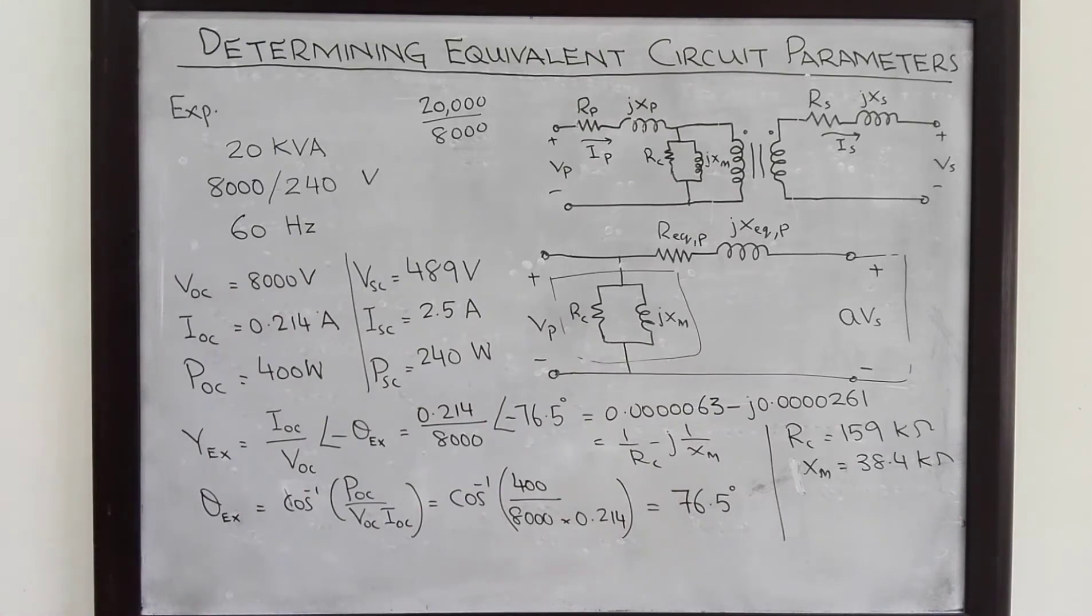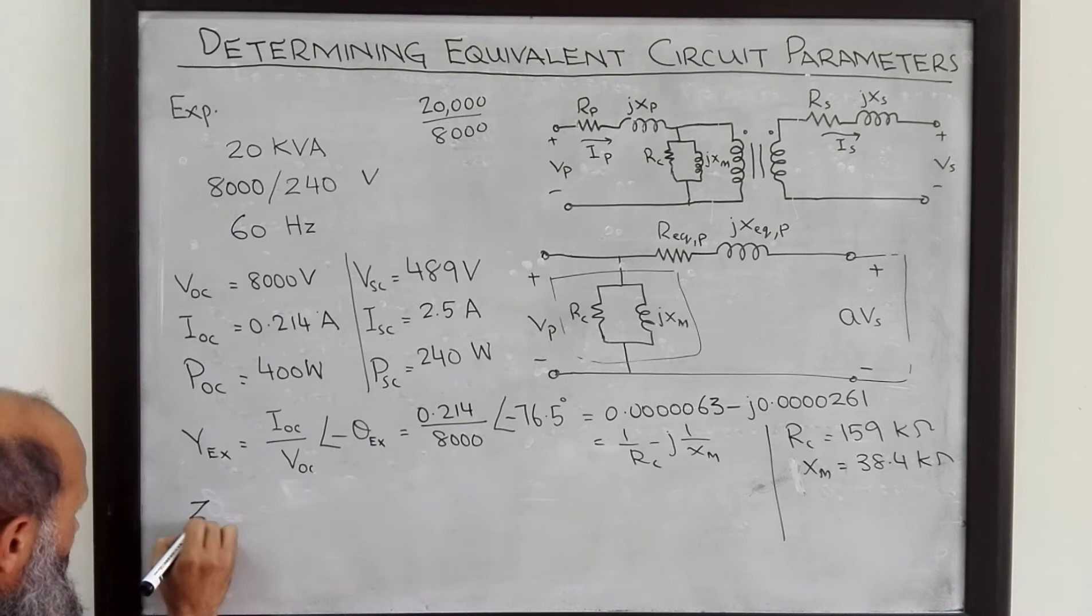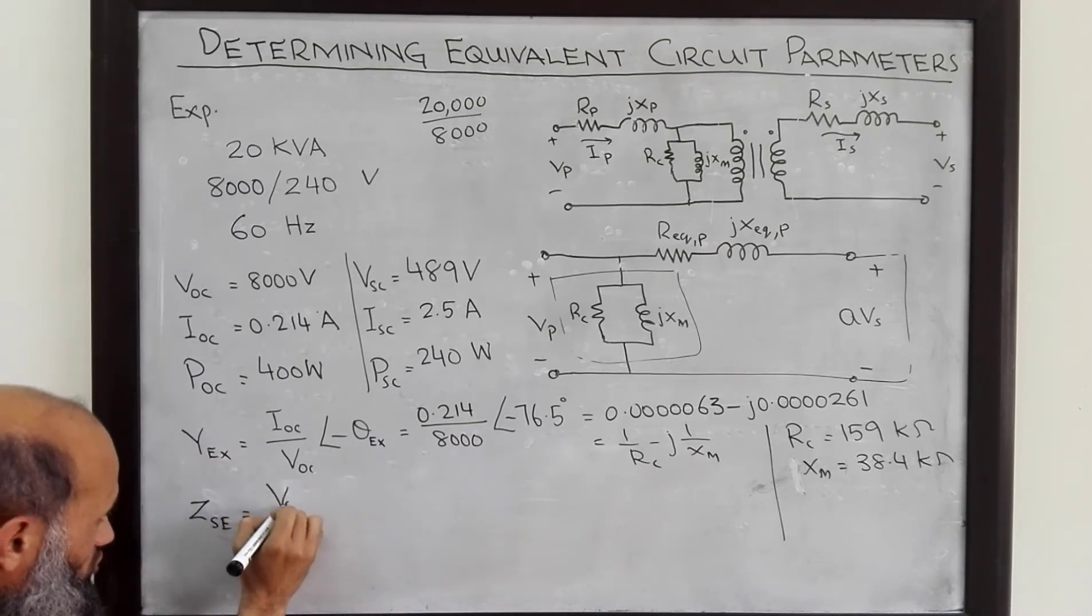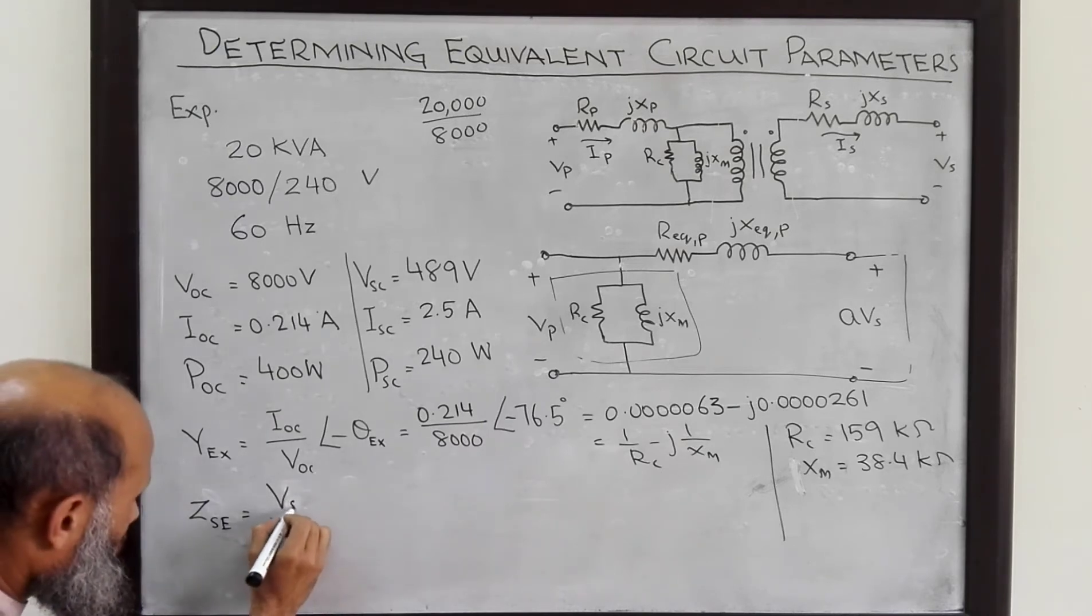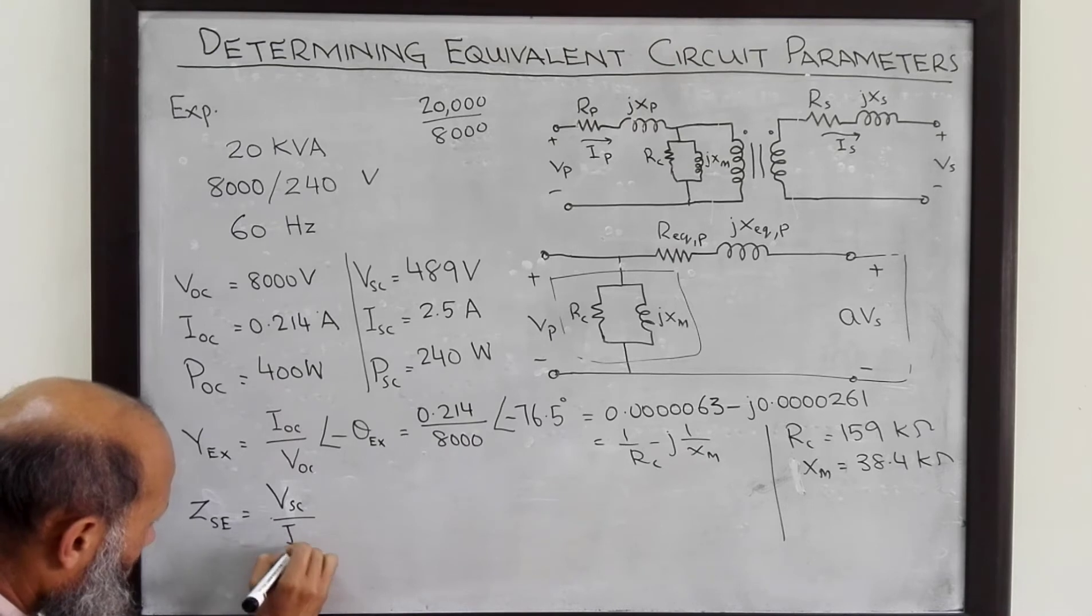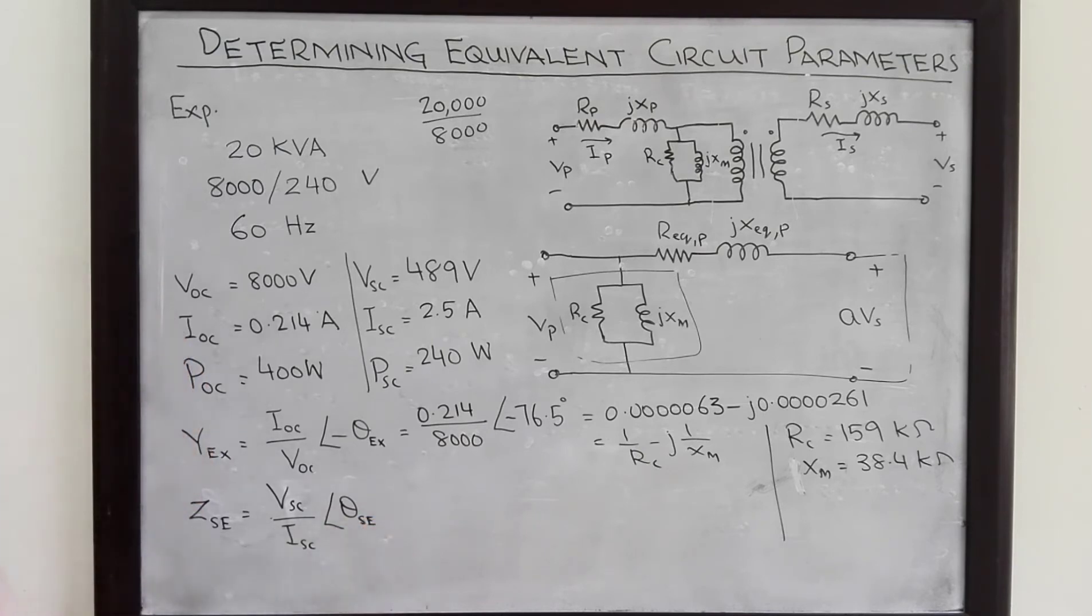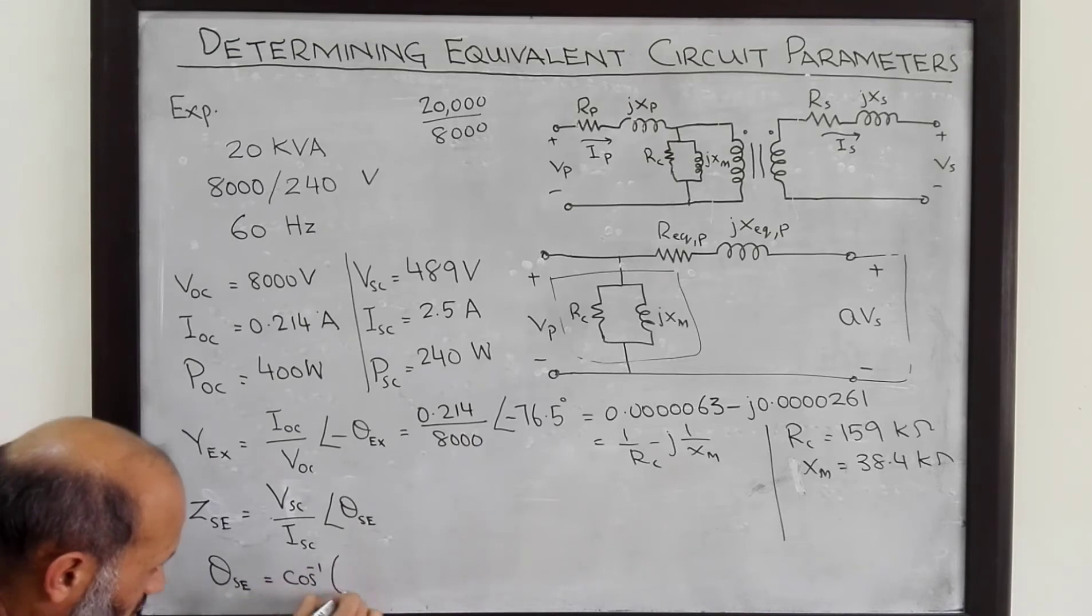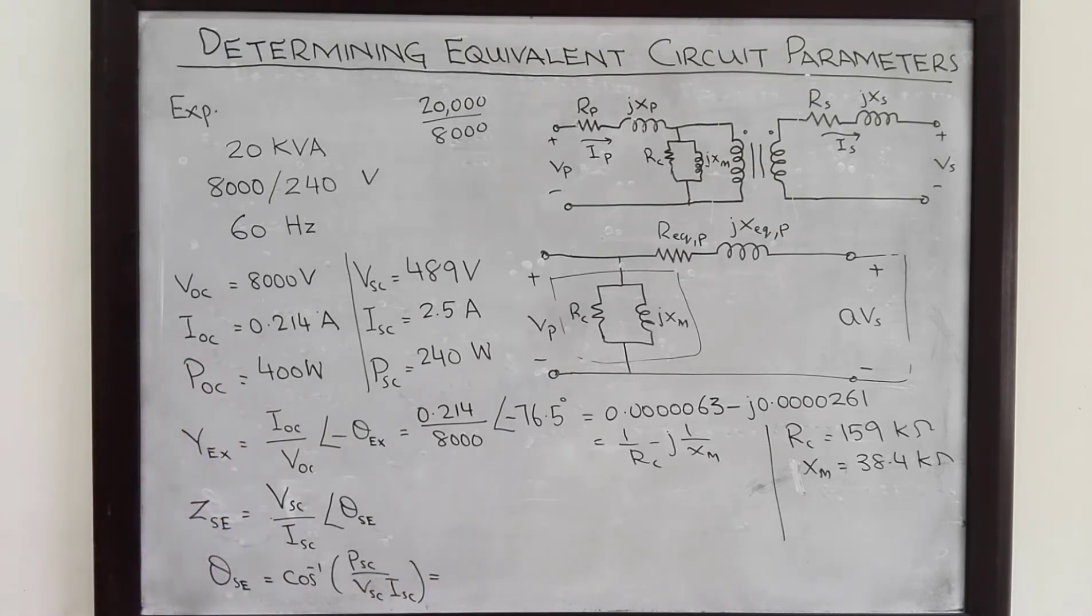Similarly the impedance of the series branch, that is equal to V short circuit divided by I short circuit. And the angle of this series branch, theta series, that is equal to cosine inverse of P short circuit divided by V short circuit times I short circuit. And this angle comes out to be equal to 78.7 degrees.